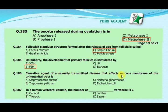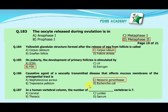Our next MCQ is: the causative agent of a sexually transmitted disease that affects mucous membranes of the urogenital tract is — option A: Staphylococcus aureus, option B: Treponema pallidum, option C: Neisseria gonorrhoeae, option D: Escherichia coli. Our correct answer is C, Neisseria gonorrhoeae.